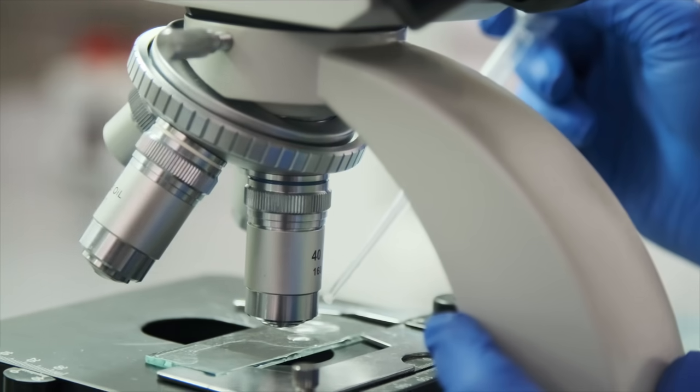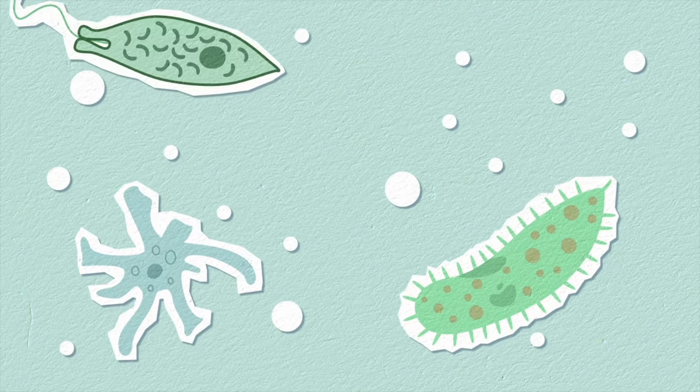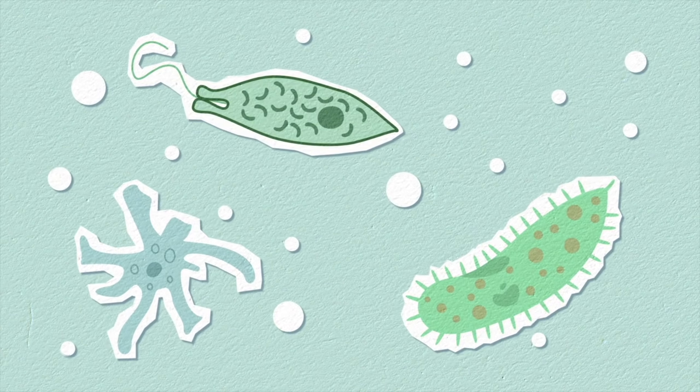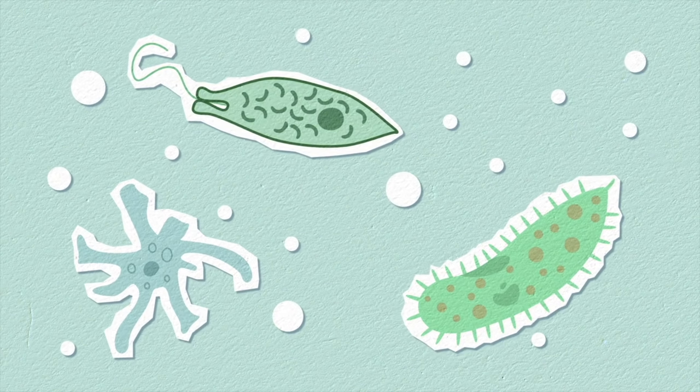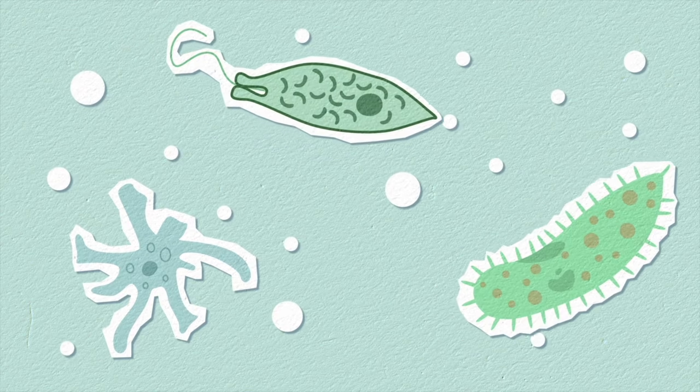Imagine a drop of water from a pond. With the naked eye, it looks like an ordinary drop of water. Look at that same drop under a microscope and you would see an entire world of organisms scurrying about. This tiny drop of water is an ecosystem.